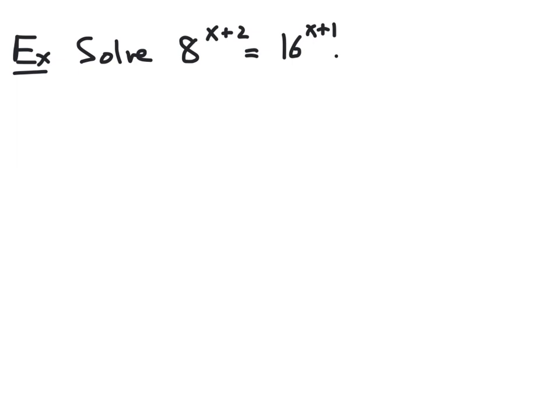In this example, we want to solve the equation 8 raised to the x plus 2 power equals 16 to the x plus 1 power. Unlike the previous example, this equation does not have the same base on each side. However, the two bases are certainly related. In fact, 8 is 2 to the 3rd power, and 16 is 2 to the 4th power. So both of our bases are, in fact, powers of 2. This means we can rewrite our bases in terms of the number 2 and rewrite our equation.